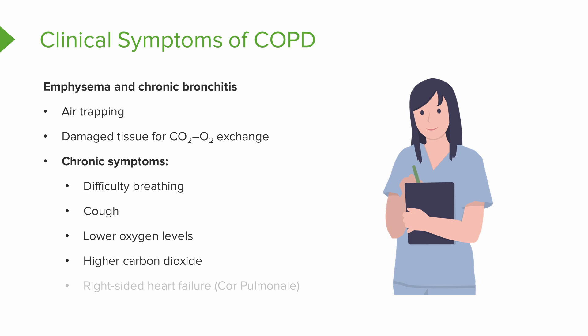Their CO2 level is going to be higher. Their arterial blood gases, ABGs, are going to be very different from yours and mine, depending on how far the disease has progressed. They're going to have lower oxygen levels and higher CO2 levels because they retain CO2 due to their poor exchange.